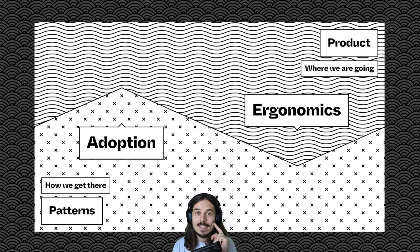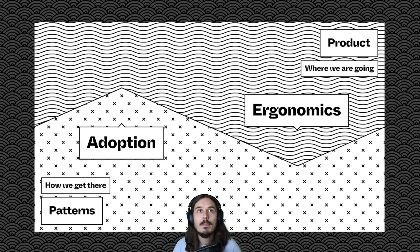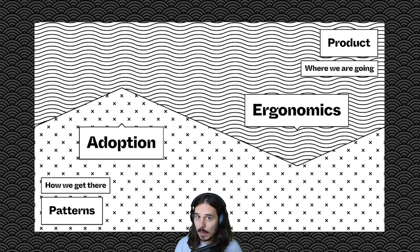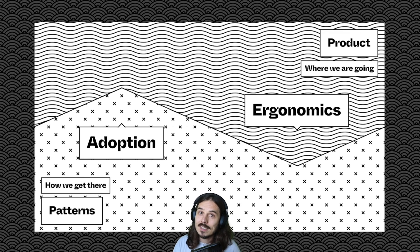Similarly, on the vertical axis — design patterns to product design, and development patterns to product development — those vertical conversations are between how we get there and where we're going. For the patterns folks, they're trying to get their component libraries and design systems adopted and get coverage across the product. Product folks are very much worried about the ergonomics of those tools: are these components easy to implement, easy to understand, well documented? Whether or not those patterns are serving the user and the direction of the product is another concern — do we need to modify them, add new ones, or just use the ones we have?